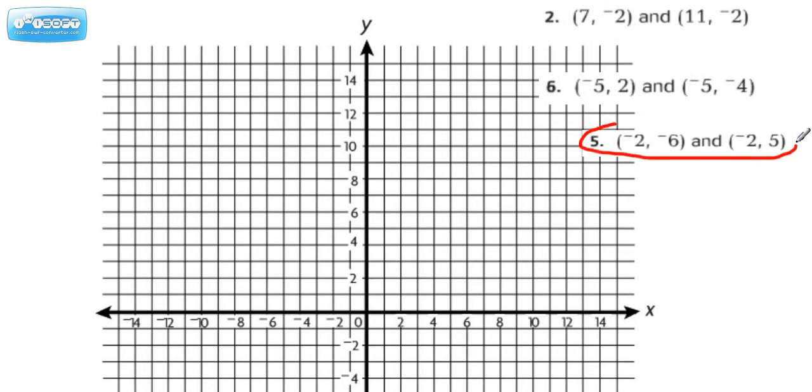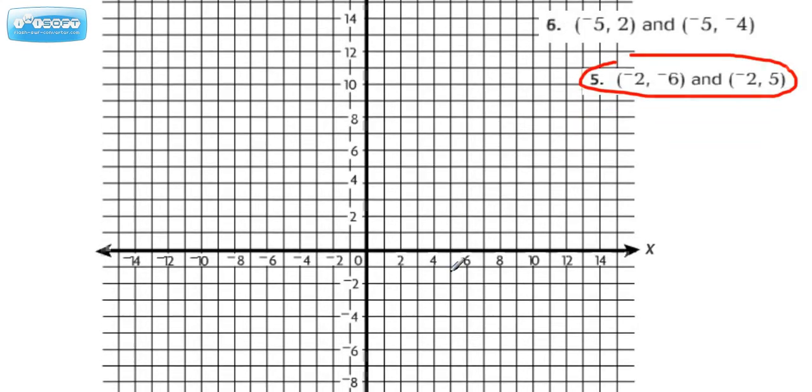So we're doing this one right here. We're going to plot a negative 2, negative 6. So if we go negative 2, this would be a negative 1, this would be a negative 2. And then we're going to go down 1, 2, 3, 4, 5, 6. So we'll call that just to give it a name. We'll call that point A.